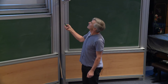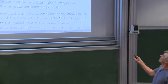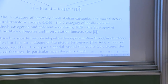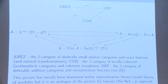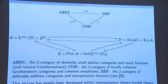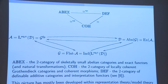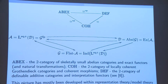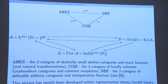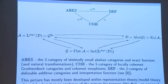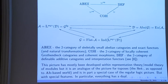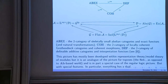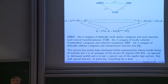The bit that's missing — it's a little too long — this should be the exact functors from A to the category Ab of abelian groups. The picture has been developed essentially within the model theory of modules and representation theory itself, but it really is an analogue of something that can be seen in the topos world.